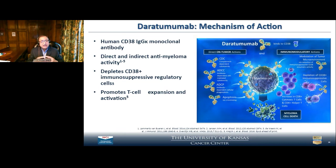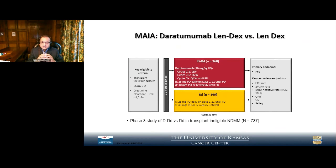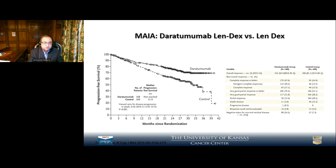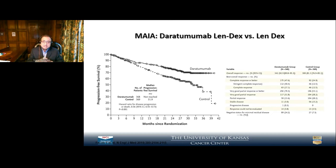Daratumumab is one of the monoclonal antibodies against myeloma cells, and we also have isatuximab — another monoclonal antibody now approved for multiple myeloma treatment. These drugs are usually not used up front except: daratumumab is now FDA-approved in transplant-ineligible patients with Revlimid and dex. The Dara-RVd-dex regimen compared to RVd-dex clearly shows daratumumab is superior in response as well as progression-free survival. I have started seeing some patients getting daratumumab up front before being referred to me for potential transplantation.